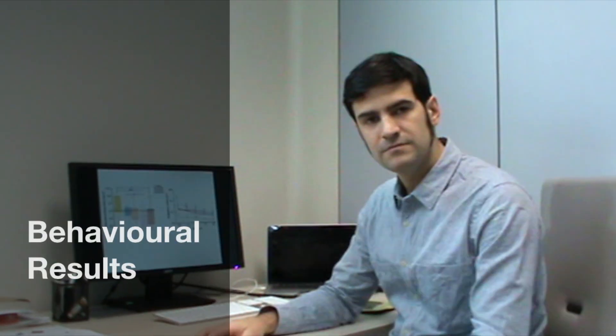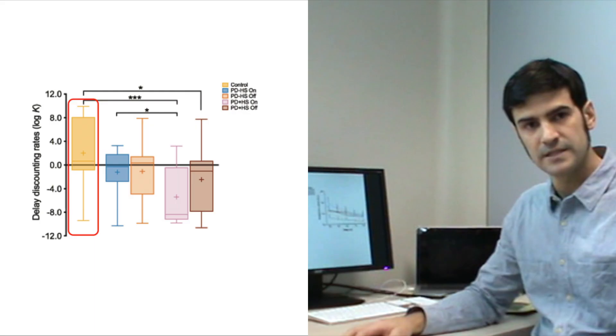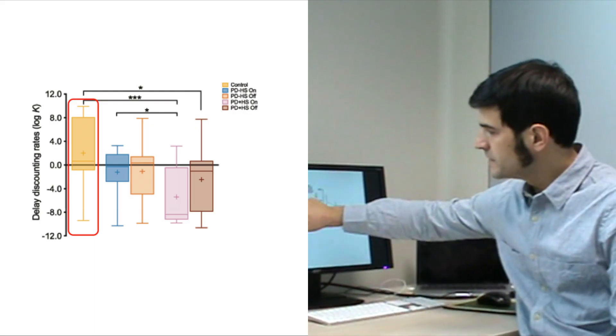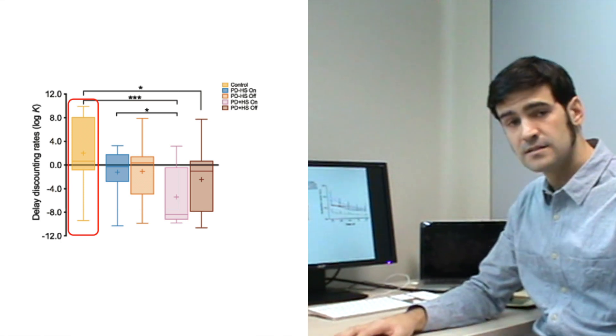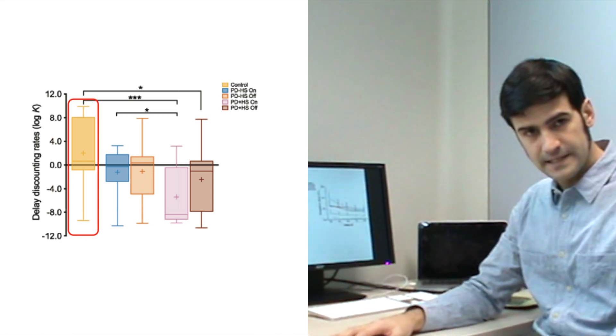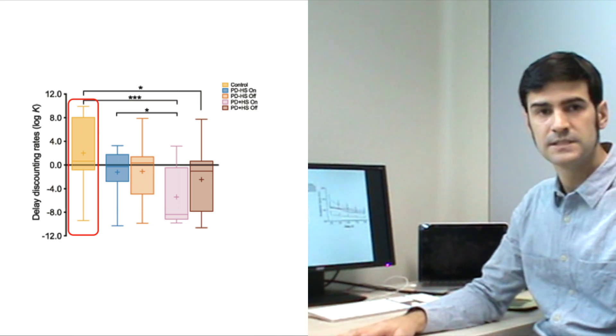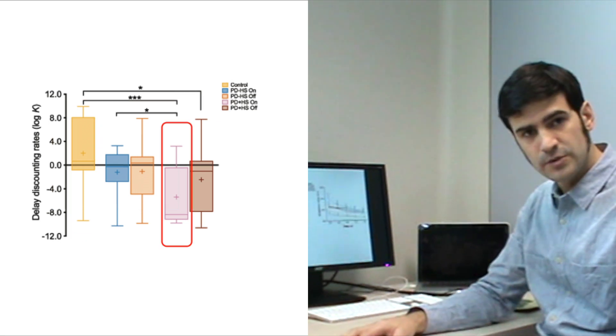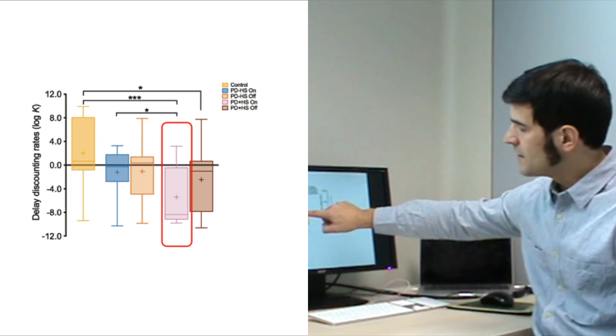At the behavioral level, we see significant differences between the groups in the delayed discounting rates. Healthy controls have an elevated discounting rate, suggesting they are less likely to wait to get the reward. However, the ICD group while medicated have a reduced discounting rate, suggesting that they tolerate waiting times to get the erotic images. This is not the case while off medication, where we see elevated discounting rates.